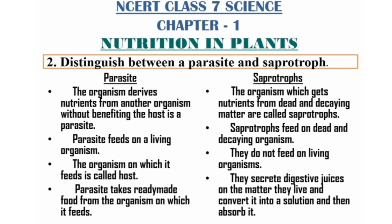Saprotrophs: the organisms which get nutrients from dead and decaying matter are called saprotrophs. Saprotrophs feed on dead and decaying organisms; they do not feed on living organisms. They secrete digestive juices on the matter they live on, convert it into a solution, and then absorb it.